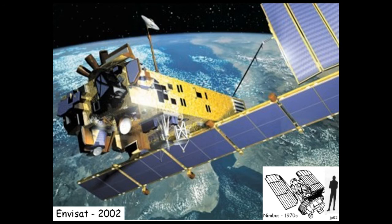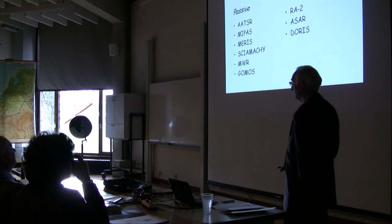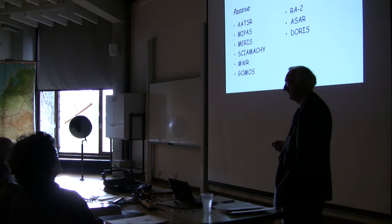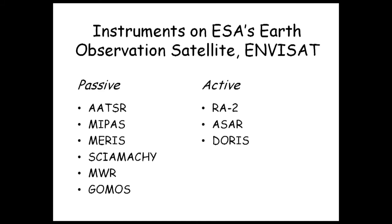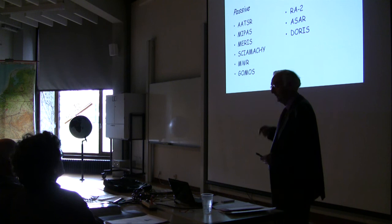That's Envisat — a European Space Agency satellite launched in 2002. It's very large and very heavy, weighing eight tonnes, and it is full of instruments. It has instruments measuring radiation from below — those are the passive instruments, covering much of the spectrum — and then you also have active instruments, where you're sending signals down from the satellite using radar systems and getting signals back which tell you things about the Earth from space.